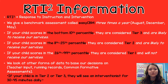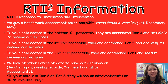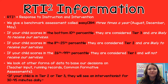If your child scores in the bottom 10th percentile on EZCBM, they are considered tier three and are likely to receive our services from the interventionist. If your child scores in the 11th to the 25th percentile, then they are considered tier two, and they are also likely to receive our services. If your child scores in the 26th to the 99th percentile, then they are considered tier one and will stay in their general education classroom, receiving further instruction or enrichment during that time.